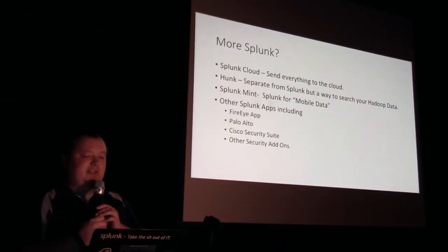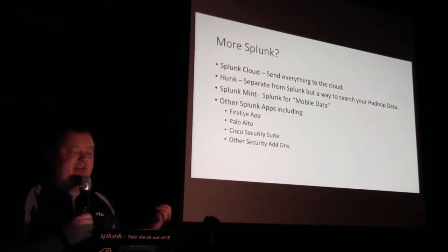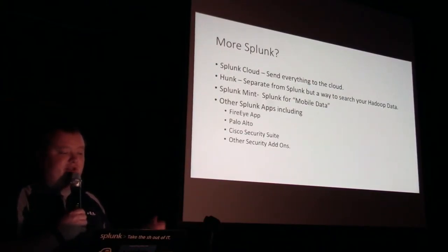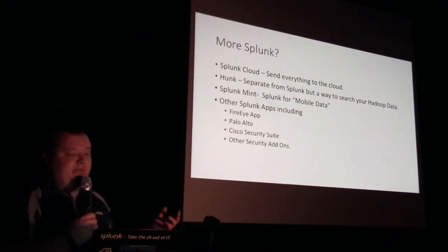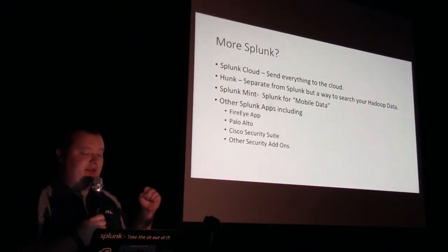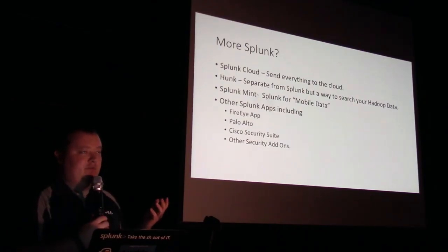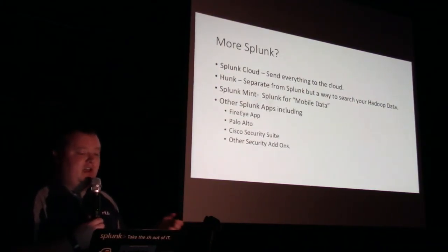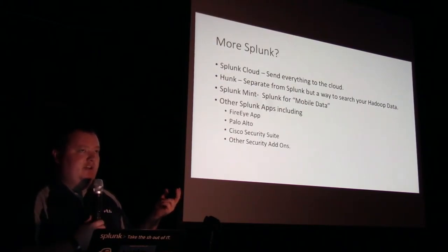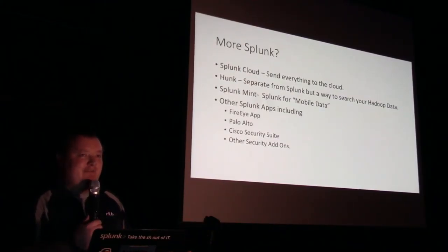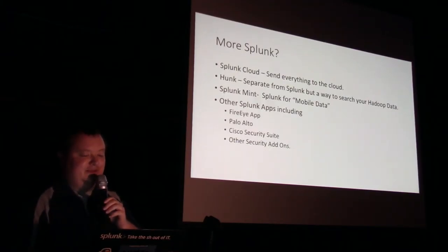Splunk MINT is also kind of new - it got released last year. It's to get mobile data into Splunk. Basically if you have a mobile application, it's able to pull the information out and pump it into Splunk in a nice searchable format. Other Splunk apps include FireEye, Palo Alto, and Cisco Security Suite - they've got a bunch of stuff and most of them are free. The main security app everyone loves is a premium app you have to pay extra for, but Splunk just wants you to send everything into it and buy as much license as possible.